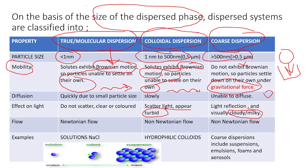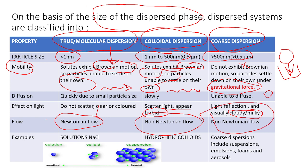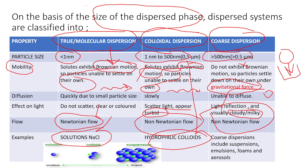Next is rheology. True dispersion will exhibit Newtonian flow. Colloidal dispersion will exhibit non-Newtonian flow. Coarse dispersion also exhibits non-Newtonian flow. An example of molecular dispersion is saline solution. An example of colloidal dispersion is hydrocolloids such as acacia, tragacanth, and gelatin. Suspensions and emulsions come under coarse dispersion.